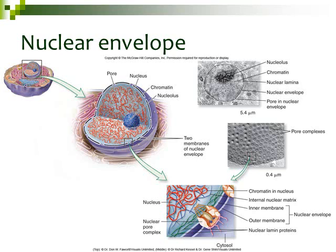Inside of the nucleus, you have chromatin, which is made up of DNA and proteins that are associated with the DNA. You also have a structure called the nucleolus, which is shown as the bluish-purple round ball in the middle of your nucleus.